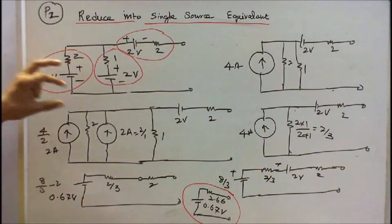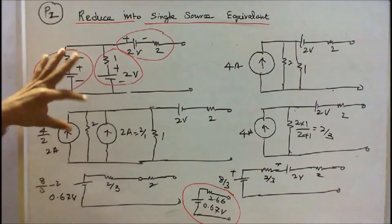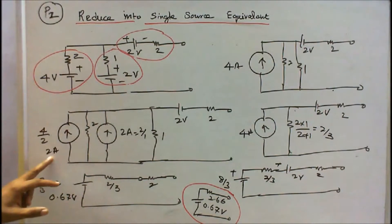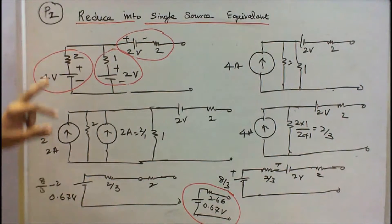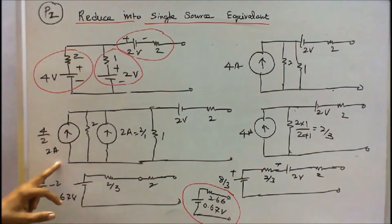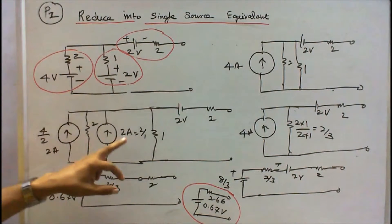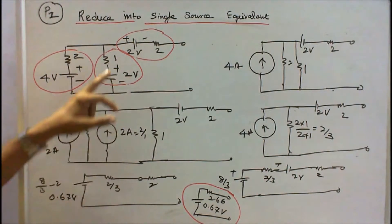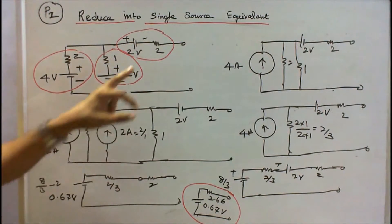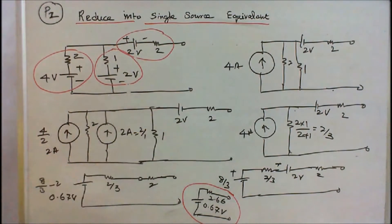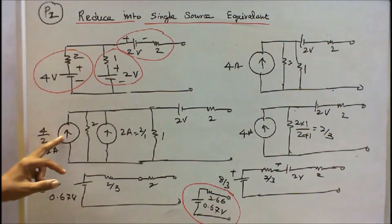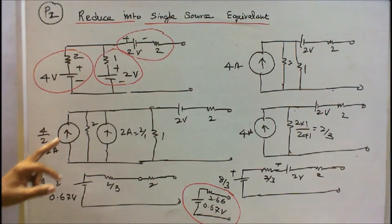First step: I will convert these 2 voltage sources into a current source. This is 4 by 2, that is equal to 2 amps, and the 2 ohm resistor is connected in parallel with the source. Similarly, 2 by 1 is equal to 2 amps and the 1 ohm resistor is connected in parallel. Now I redraw the diagram and check the direction of current — the direction is the same.